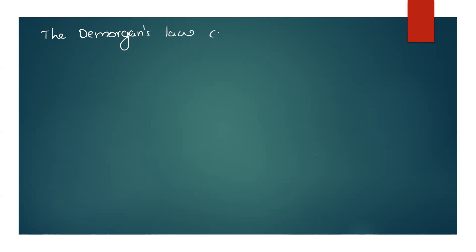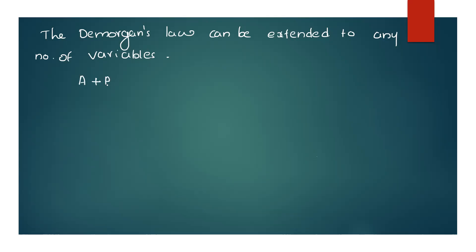In De Morgan's law, we have to extend this to any number of variables. The first law extended: A plus B plus C plus etc., if complemented, equals A complement into B complement into C complement etc.